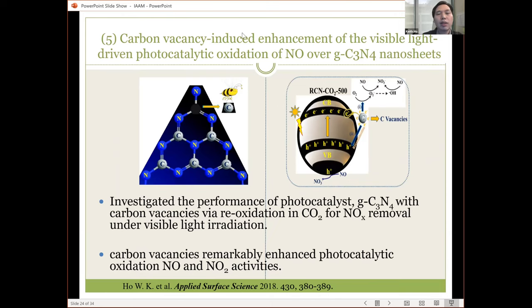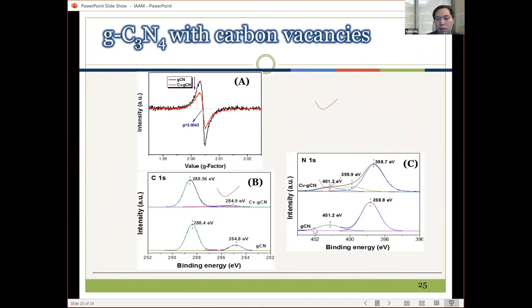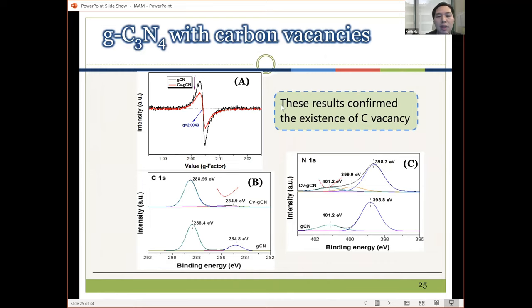In the past two years, we also studied surface vacancies on graphitic carbon nitride. We tried to make carbon vacancies on the surface of the photocatalyst — on carbon nitride nanosheets — and investigated the performance of these carbon vacancies through photo-oxidation in CO2 for NOx removal under visible light irradiation. We found that these carbon vacancies enhanced photocatalytic oxidation for both NO and NO2.